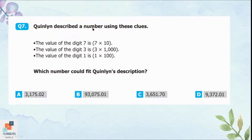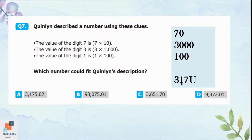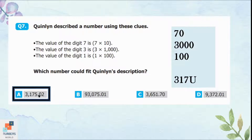Question 7: Quinlan described a number using these clues — the value of the digit 7 is 7 multiplied by 10, which equals 70; the value of the digit 3 is 3000; the value of the digit 1 is 100. So 3 is at the thousands place, 1 is at the hundreds place, 7 is at the tens place, and the units place is missing. Out of all options, only option A matches, with 3, 1, and 7 at those same places and 5 at the units place. Option A is correct.